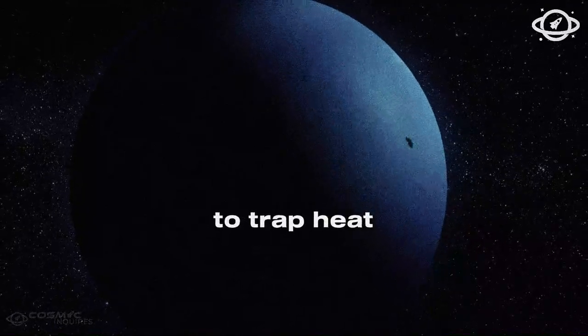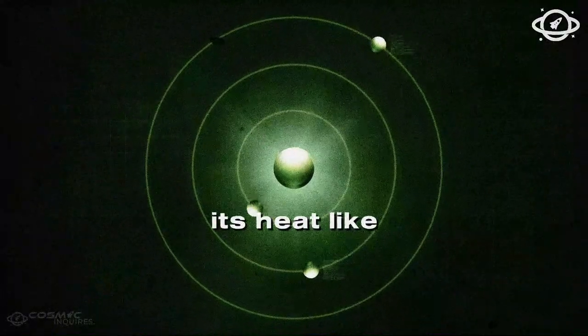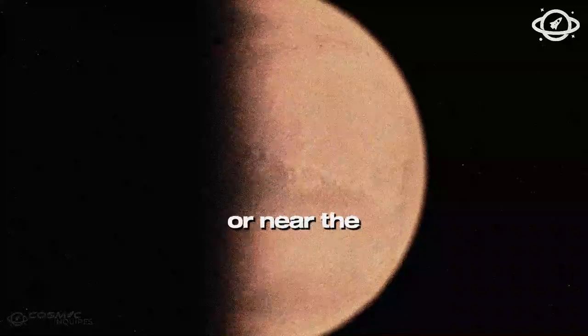While Mercury has no atmosphere to trap heat, Venus retains its heat like a thermal flask, keeping temperatures constant even at night or near the poles.